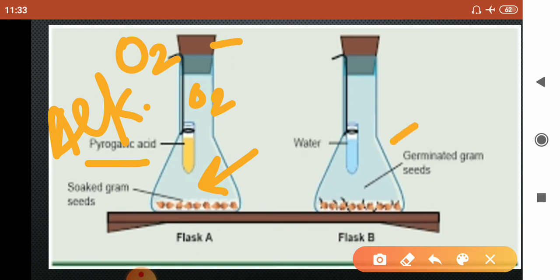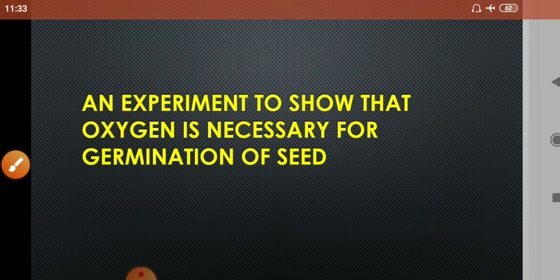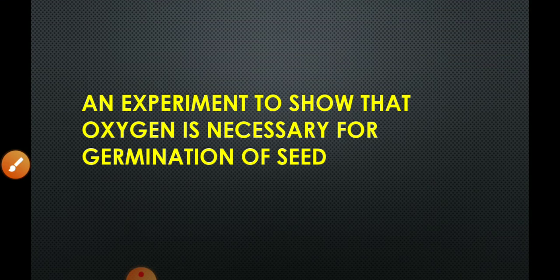But here in Flask B, because we have taken plain water and there will be no effect of plain water on oxygen content, these soaked seeds will germinate because there is sufficient oxygen present in the flask. So this shows that oxygen is necessary for germination. Let us revise this.